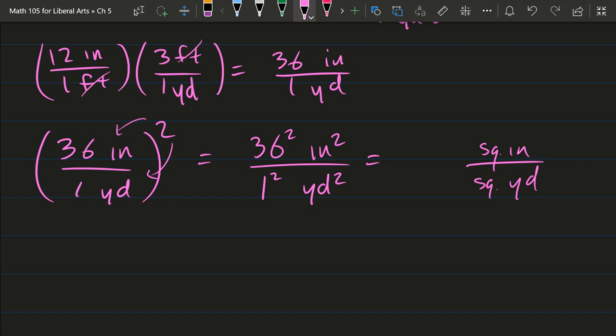So let's square 36, 1, 2, 9, 6. So that's square inches per yard.